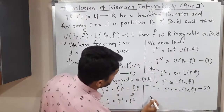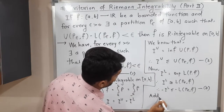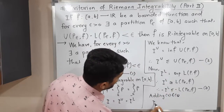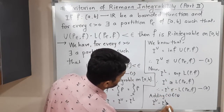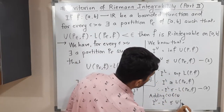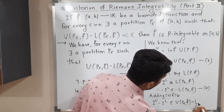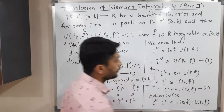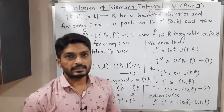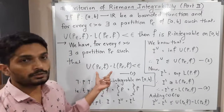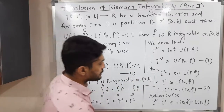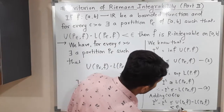Now we will add inequalities 2 and 3. Adding them, we get: I_U minus I_L is less than or equal to U(P-epsilon, F) minus L(P-epsilon, F). But the right-hand side — U(P-epsilon, F) minus L(P-epsilon, F) — is already known from equation 1 to be less than epsilon. So this is less than epsilon, from equation 1.